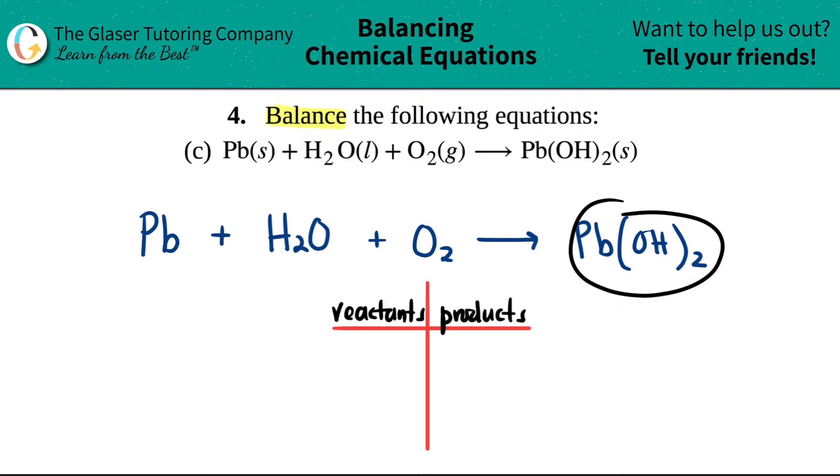List your individual elements. Just focus on one side. On the reactant side I have a Pb element, I have H, and then I have oxygen and more oxygen. So the only elements that we have are Pb, H, and O.